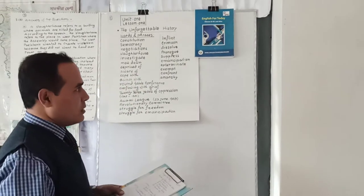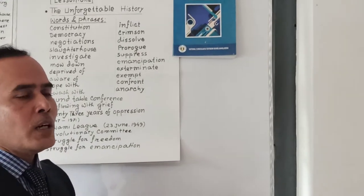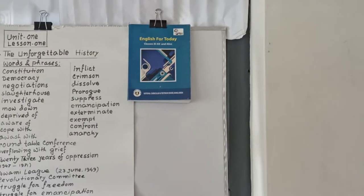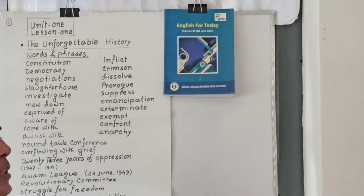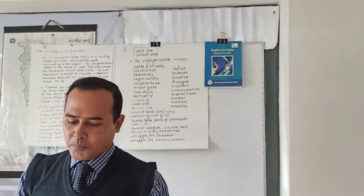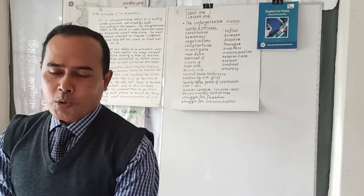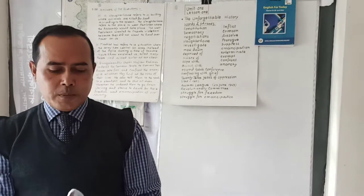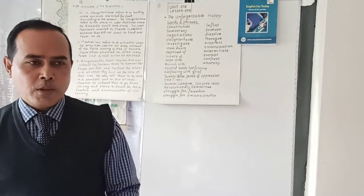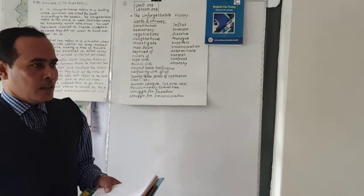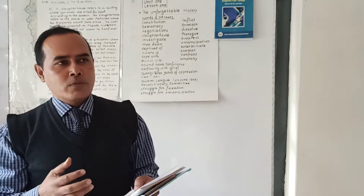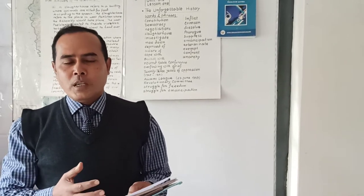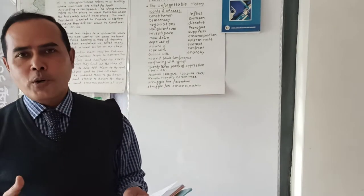This is a very nice cover page. It has been designed to commemorate the 100th birth anniversary of our Father of the Nation, Bangabandhu Sheikh Mujibur Rahman. You can see the great image of our great leader on the cover. Now, in the textbook, I'd like to mention the table of contents. There are 15 units, and from these 15 units you can have a lot of lessons from different issues and aspects from home and abroad.